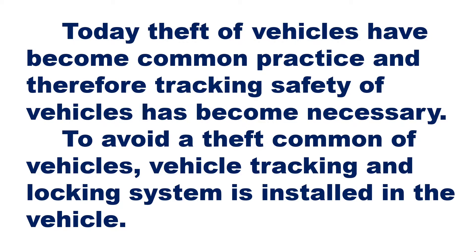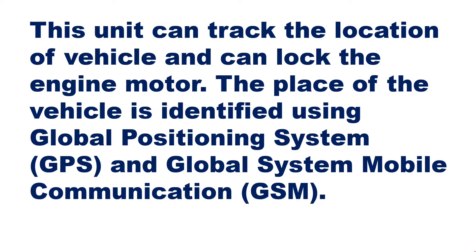This system makes use of GPS and GSM services. GSM is Global System of Mobile Communication and GPS is Global Positioning System. This unit can track the location of a vehicle and can lock the engine motor. The place of the vehicle is identified using GPS, and GSM uses a SIM card and mobile station to provide information about the vehicle's location and to enable the mobile to send a command to lock the engine.